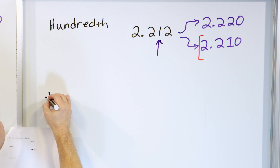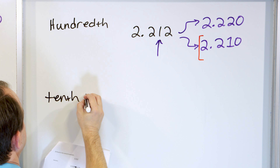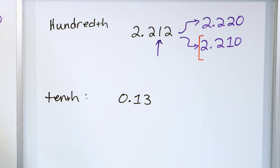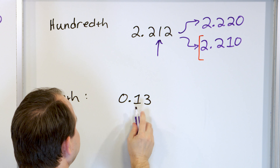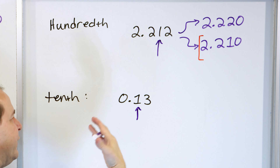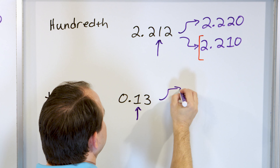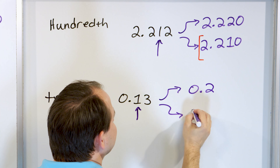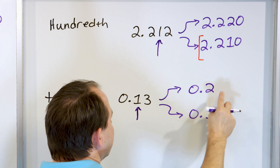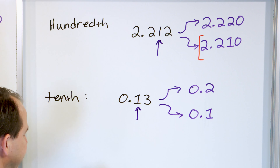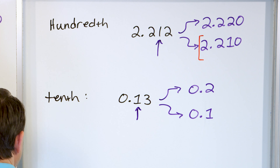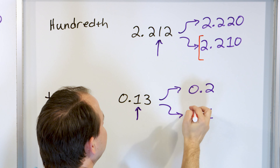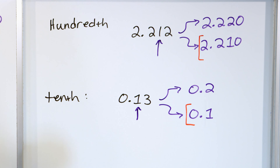Let's round zero point one three to the nearest tenth. The one here is the tenths position, so we round up to zero point two or round down to zero point one. We look next door and have a three, which is less than five, so we round down to zero point one.